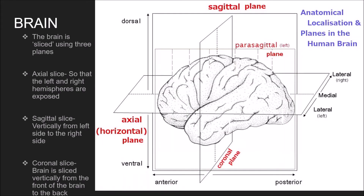But first, let us see the planes of the brain. The brain is sliced using three planes, and these planes resemble actual slicing done at the time of post-mortem examination or virtual slicing using magnetic resonance images of the brain. The three planes are shown in the figure in front of you. Slicing sideways across the brain so that the left and right hemispheres are exposed is known as axial slicing. It is also called a horizontal slice because it is a horizontal cut across the brain.